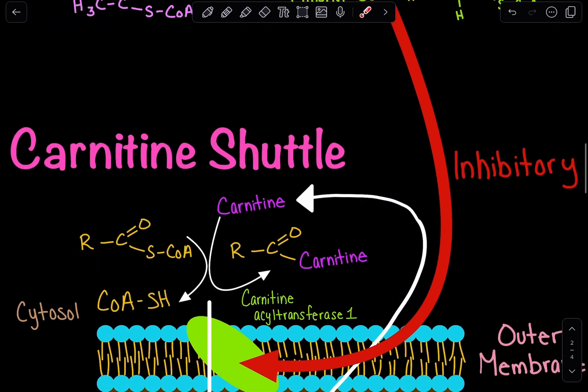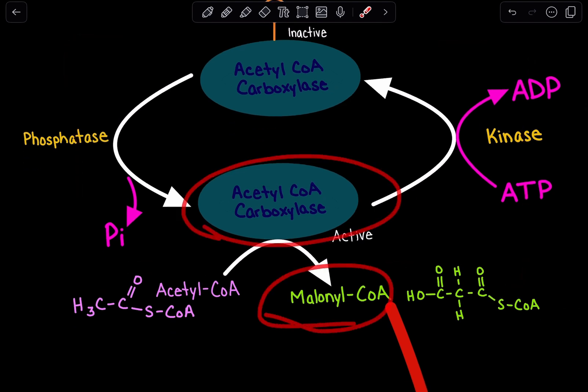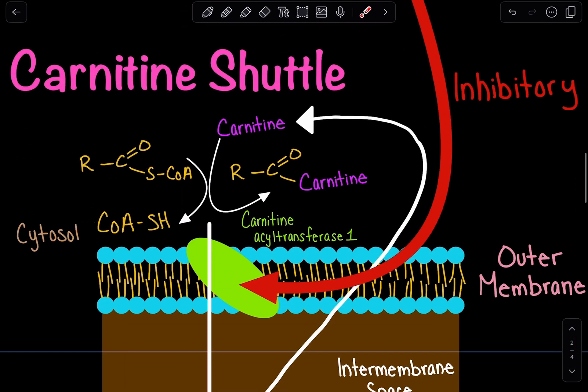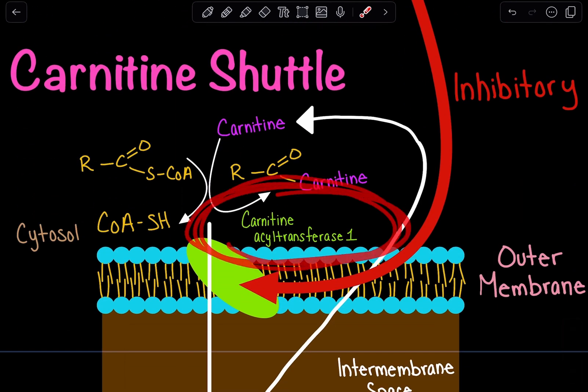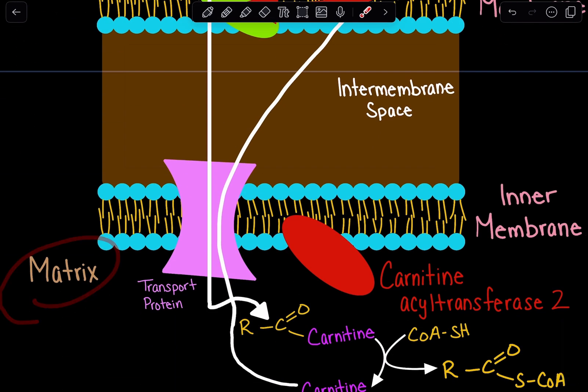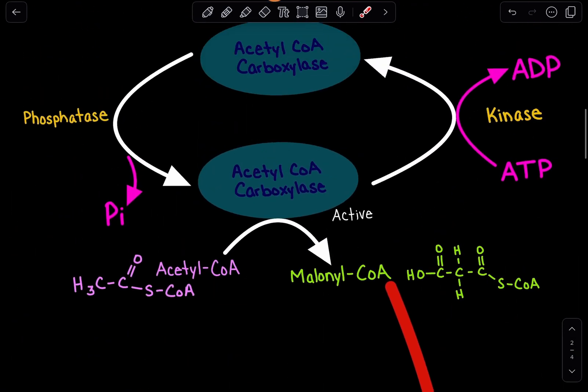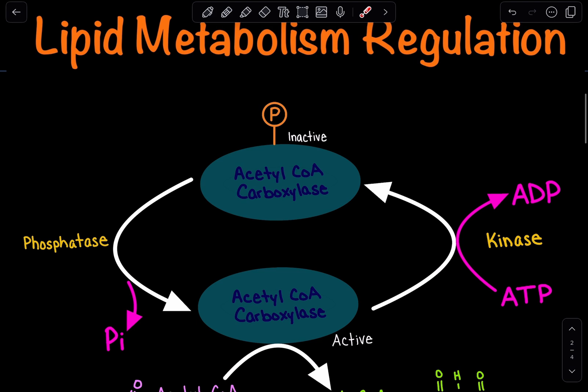This pathway regulates beta-oxidation. When ACC is active and produces malonyl-CoA, it inhibits carnitine acyl transferase. These fatty acids cannot enter the mitochondrial matrix, so beta-oxidation will not occur and you will not see production of FADH2 and NADH. It essentially regulates whether we break down lipids.